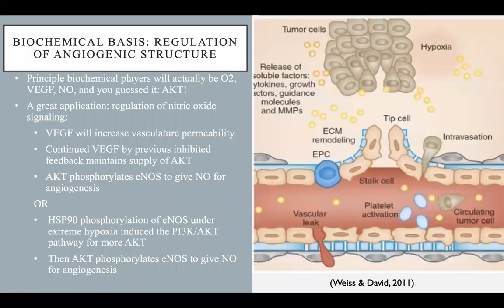Now let's consider the biochemical basis behind regulation of angiogenic structure. The issue with neoplastic vasculature is that its apparent heterogeneity induces an oxygen, nutritional, and waste gradient that perpetuates each physiologic condition, giving VEGF as a perpetual motion machine. For the AKT pathway's involvement, we consider regulation of nitrous oxide signaling in endothelial cells. VEGF increases vasculature permeability from a formative material availability basis, propagating constant supply of substrate for phosphorylation to give AKT for angiogenesis. AKT can phosphorylate any of the eNOS isoforms at serine-1177 to give nitrous oxide as an angiogenic material precursor.